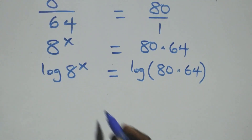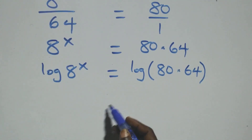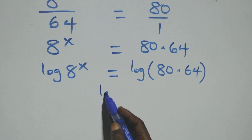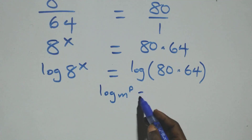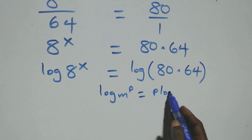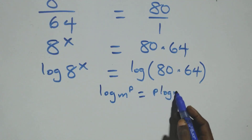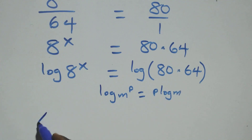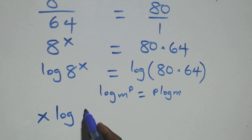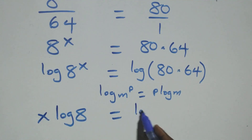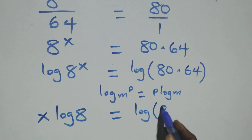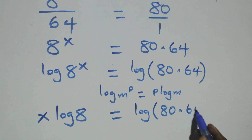This follows the power rule of logarithms. When we have log of n raised to power p, this is the same thing as p times log n. So here x times log 8 equals log of 80 times 64.